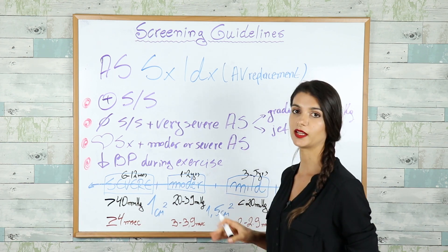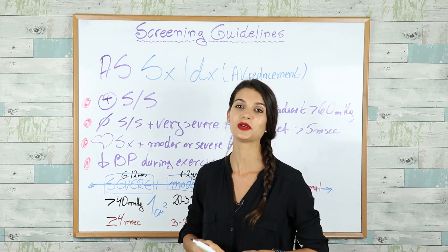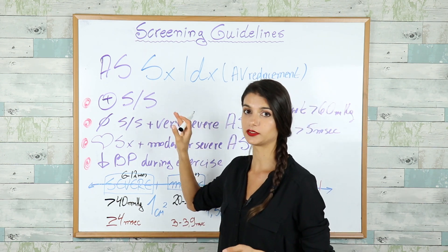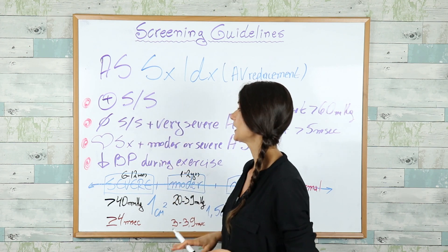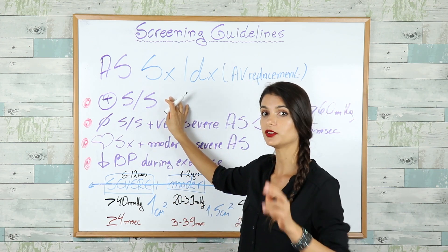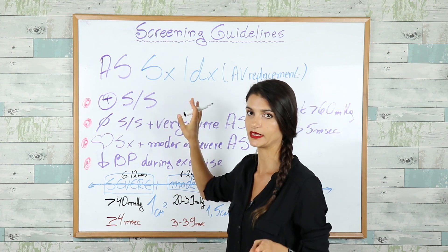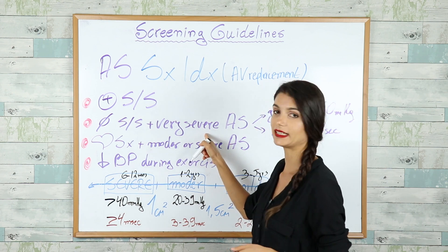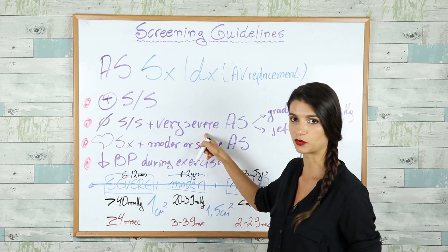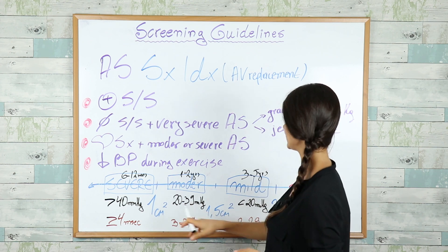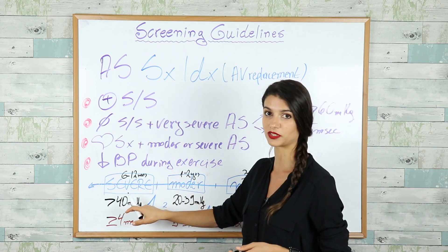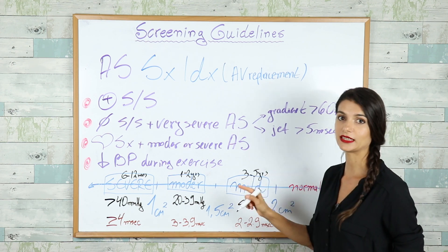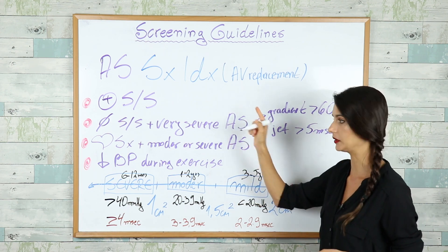You're going to get tested on this — unfortunately you have to remember a lot of numbers. The surgical indications for aortic stenosis are as follows. If the patient is symptomatic, then you replace the valve — this makes sense. If the patient is asymptomatic but has very severe aortic stenosis, meaning the pressure gradient is more than 60 mmHg and the jet is more than 5 m/s, then you also replace the valve.